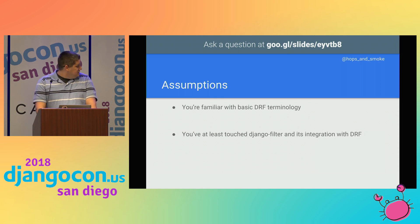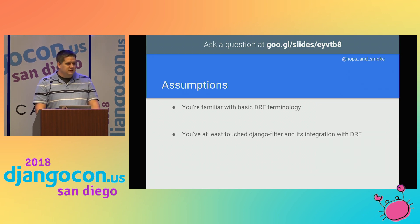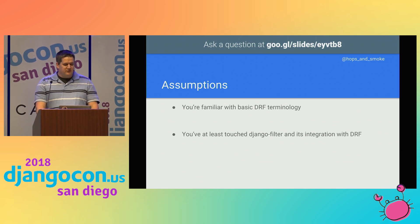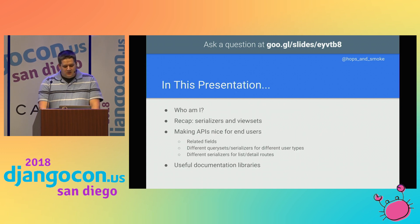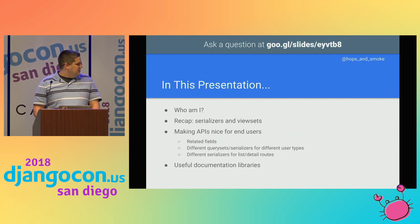A little bit of assumptions: I'm assuming that you at least have a basic familiarity with DRF terminology and you've at least touched Django Filter and how it works with DRF. If you were at Phil's API-driven Django tutorial on Sunday, you'll be fine. Here's a quick overview of what I'll be talking about today: I'll introduce myself, talk about making the APIs nice for end users, and talk about a couple of useful libraries for documentation.